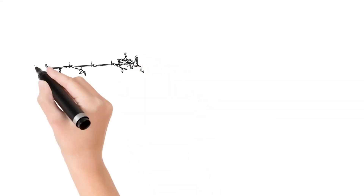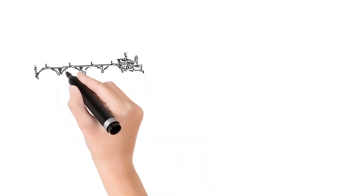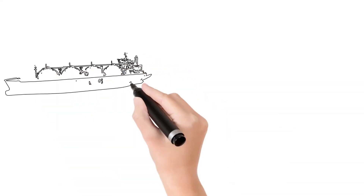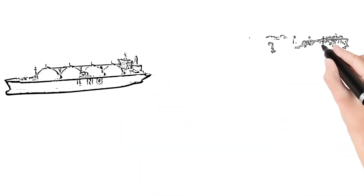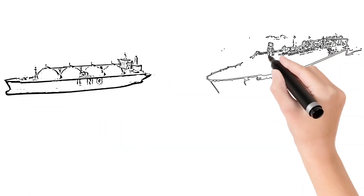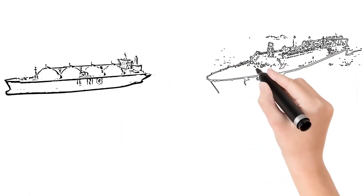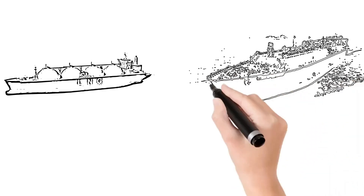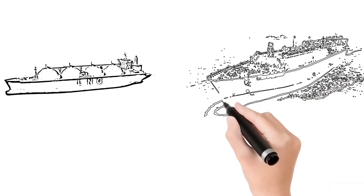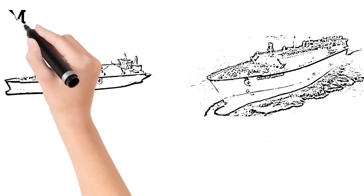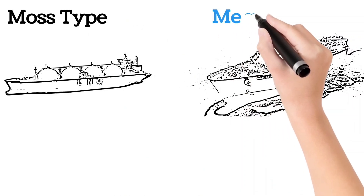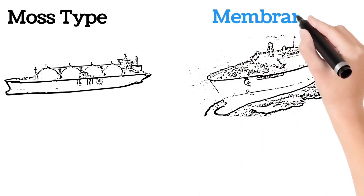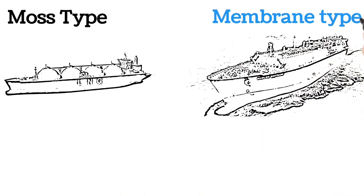Hello and welcome. In this video I am going to discuss the difference between MOZ type and membrane type LNG carriers. The MOZ type LNG carriers have spherical and cylindrical containment tanks supported by a lattice structure.